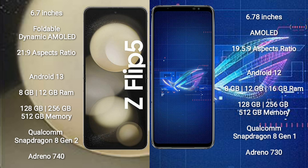Samsung Galaxy Z Flip 5 runs on the Android 13 operating system. Asus ROG Phone 6 runs on the Android 12 operating system. Samsung Galaxy Z Flip 5 comes with 8 GB or 12 GB RAM and 128 GB, 256 GB, or 512 GB internal storage, with a Qualcomm Snapdragon 8 Gen 2 processor.